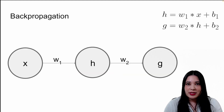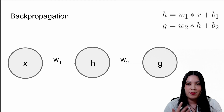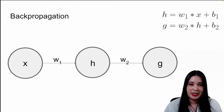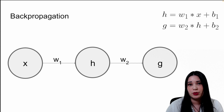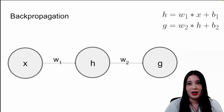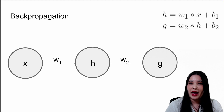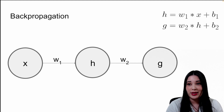So how does this relate to gradients and backpropagation? Backpropagation is basically the application of the chain rule to neural network parameters. Let's look at the world's simplest neural network where all we have is three nodes with two weights and two biases.